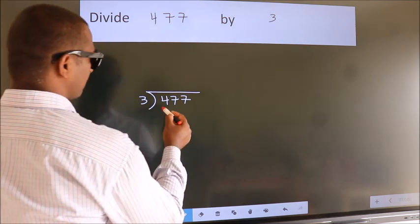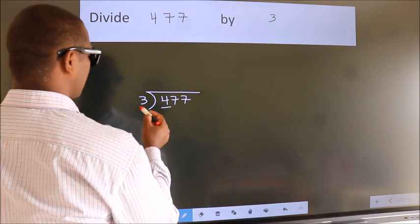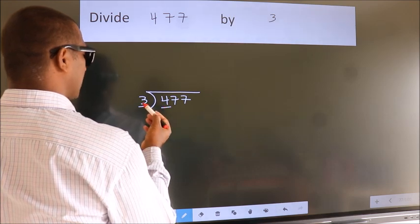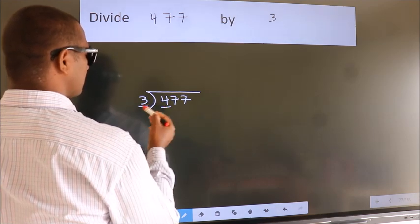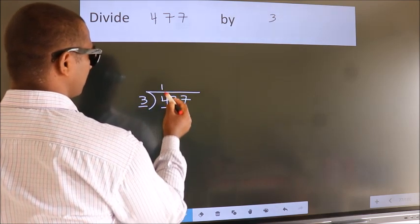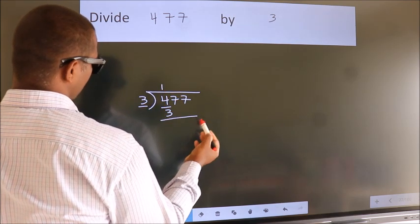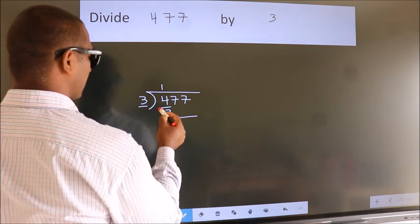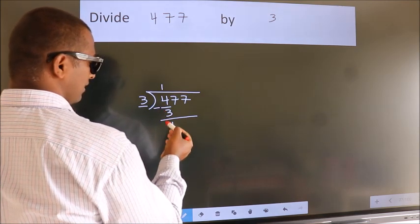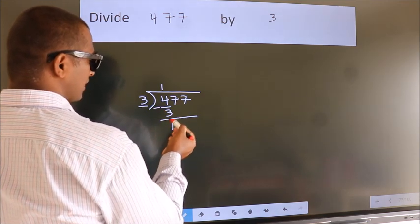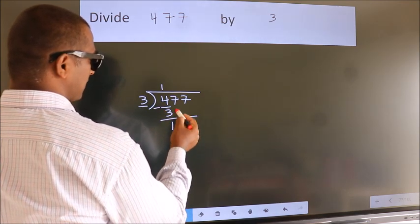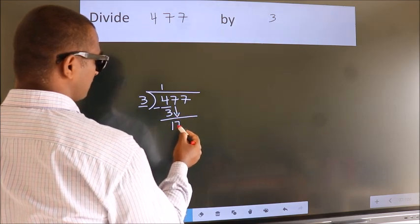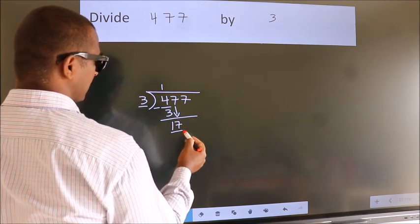Here we have 4, here 3. A number close to 4 in the 3 times table is 3 ones are 3. Now we should subtract. We get 1. After this, bring down the beside number — so 7 comes down, giving us 17.